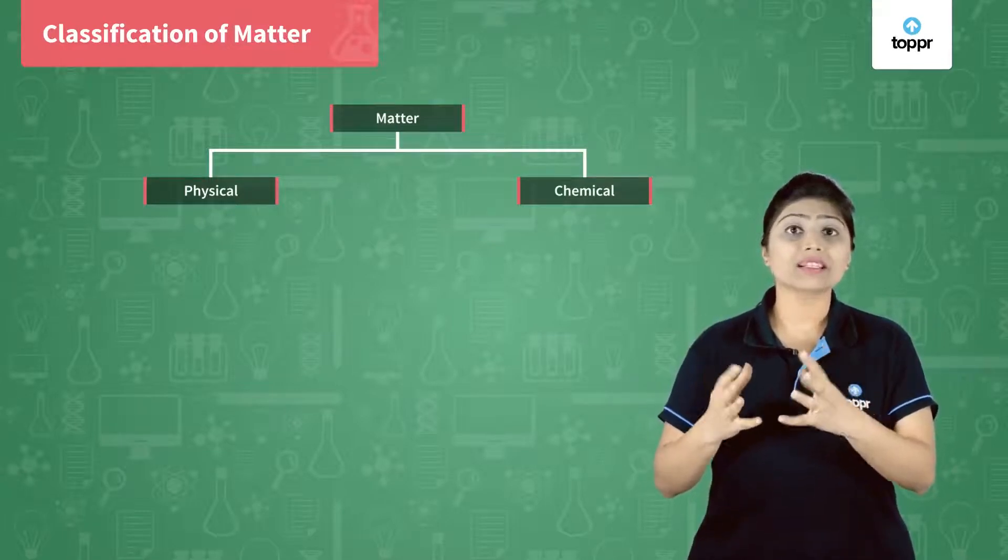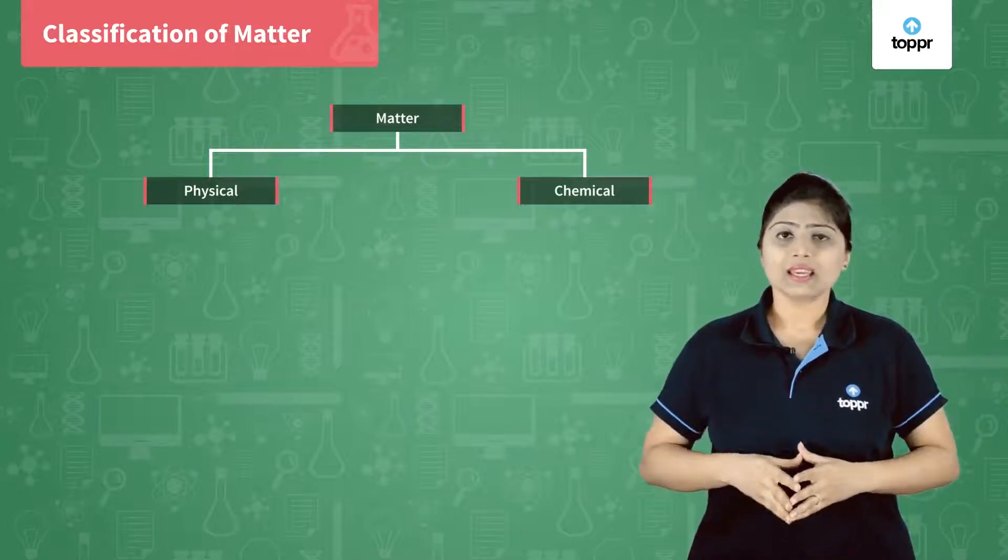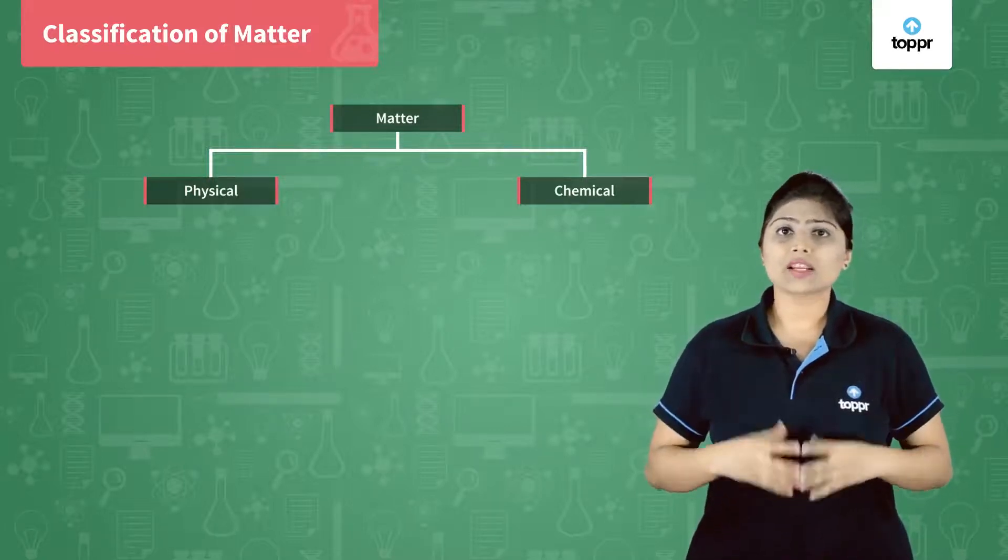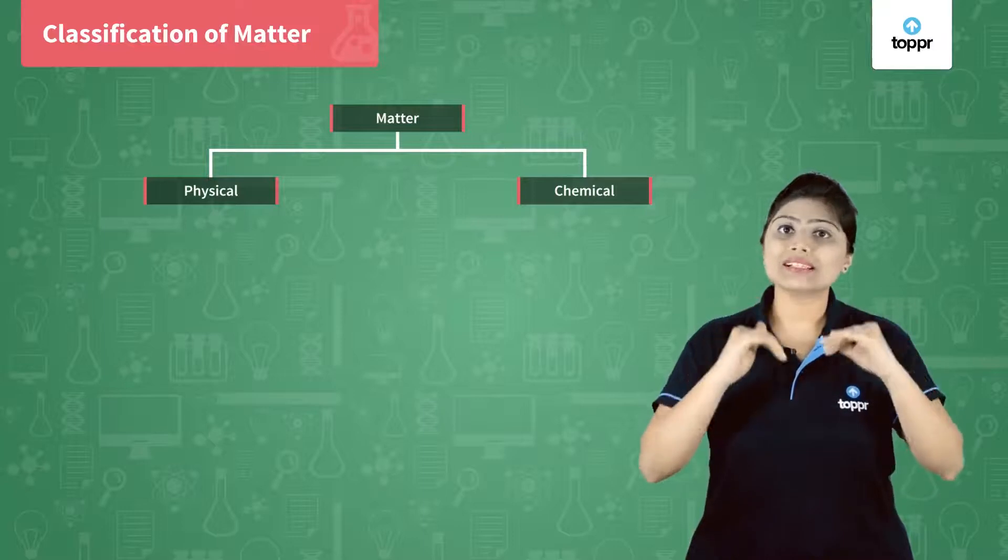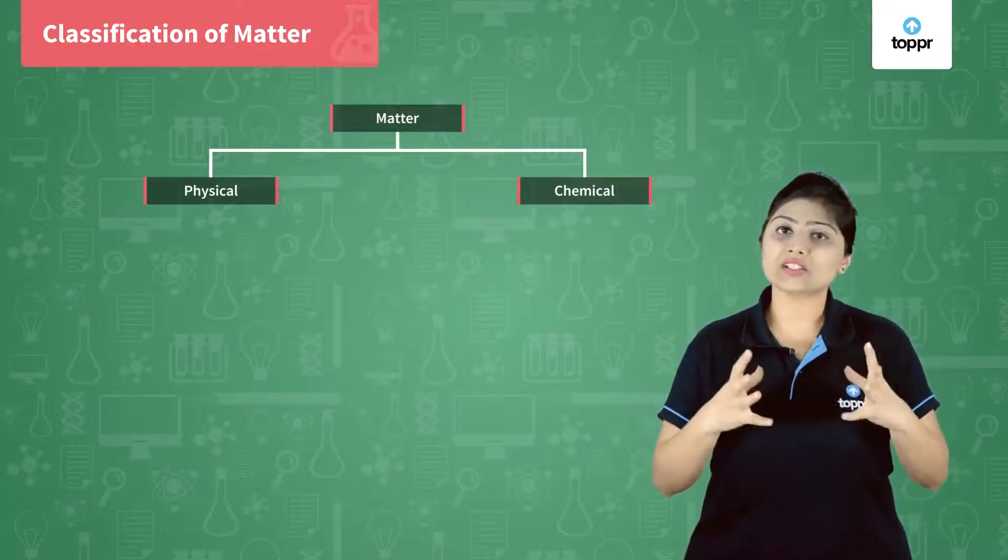the state of matter is a physical property, whereas the chemical properties of matter are those which are related to its chemical structure, the chemical nature of any matter.